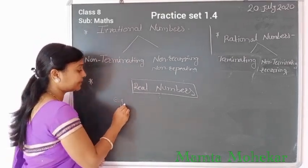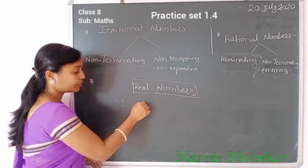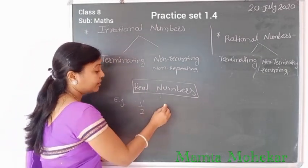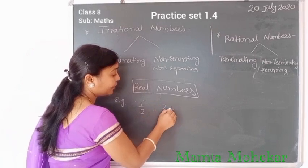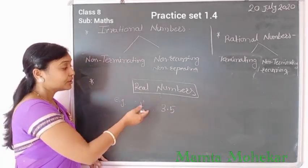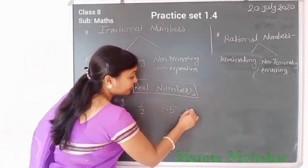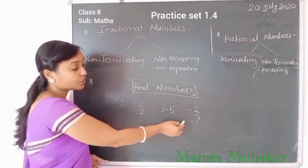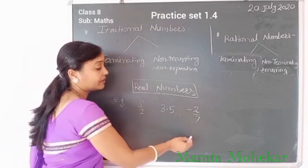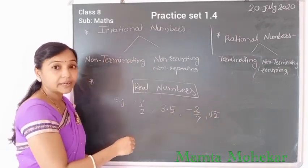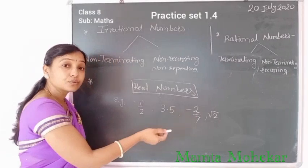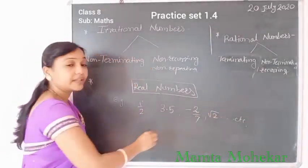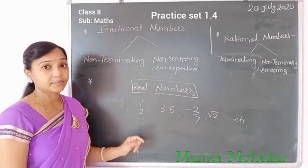For example, 1 and 2 — we can show these on the number line, so they are real numbers. 3.5 can be shown on the number line, so it is a real number. Minus 2 by 7 — we can also show it on the number line, so it is a real number. Root 2 — we can show it on the number line; it is an irrational number, so it is also a real number. These are all examples of real numbers.